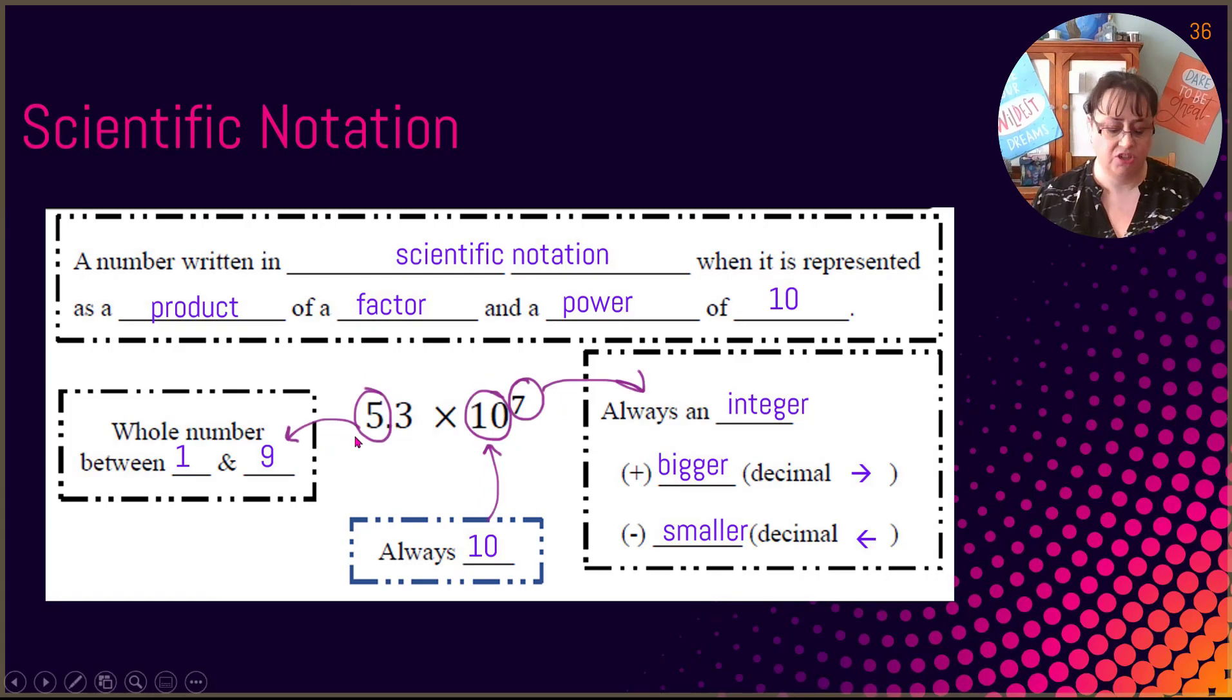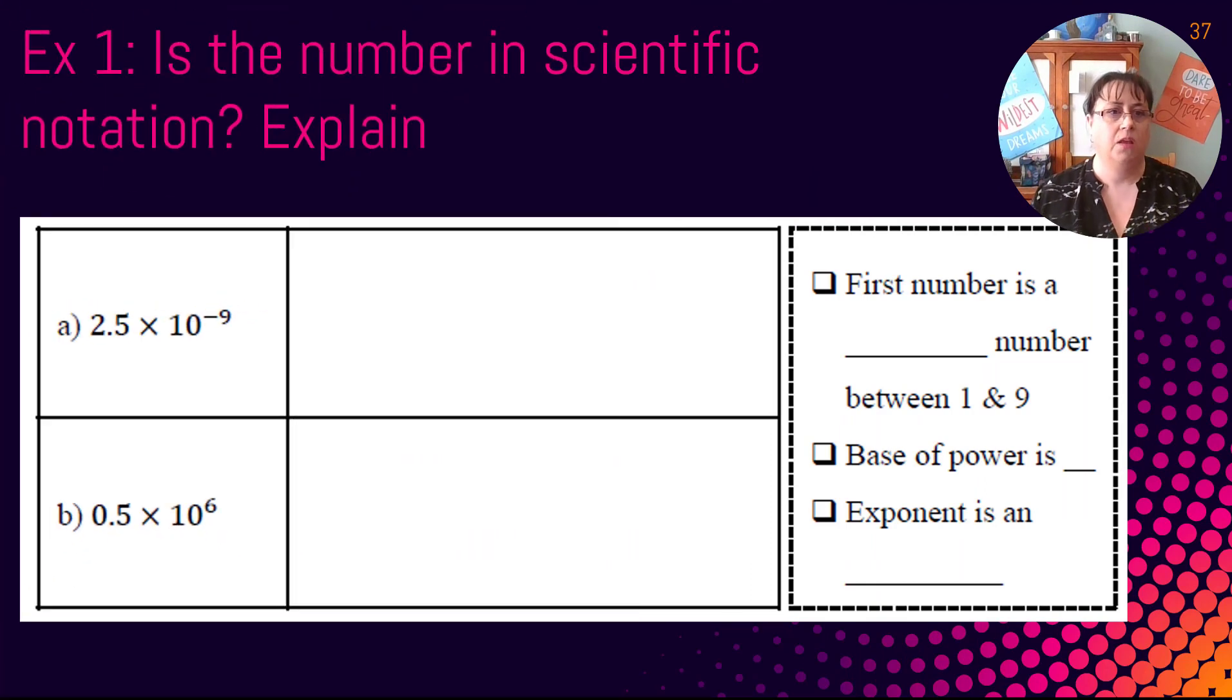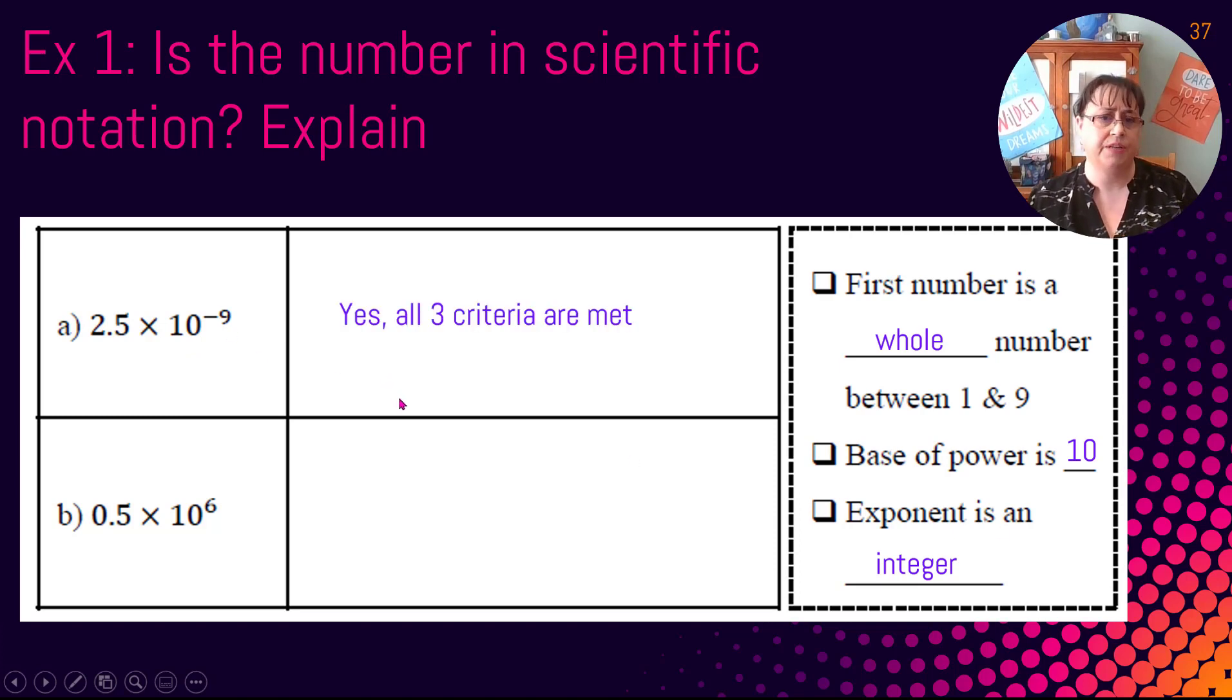So the best way to understand these is just to actually start working with them. So is the number in scientific notation or not? Here is a quick little checklist. Is the first number a whole number between 1 and 9? Is the base a power of 10? And is the exponent an integer? If we look at the first one, 2.5 times 10 to the negative 9. The first number is a whole number between 1 and 9. The base is a power of 10. Yes. And the exponent is an integer. So all three criteria are met. So we're good.